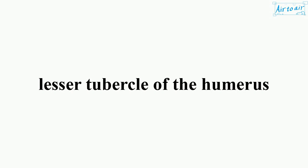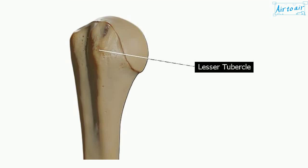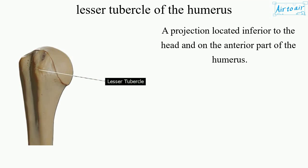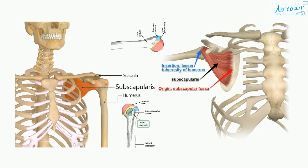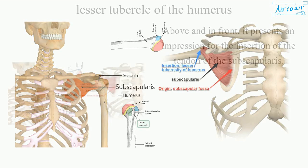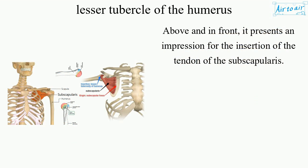Lesser tubercle of the humerus. A projection located inferior to the head and on the anterior part of the humerus. Above and in front, it presents an impression for the insertion of the tendon of the subscapularis.